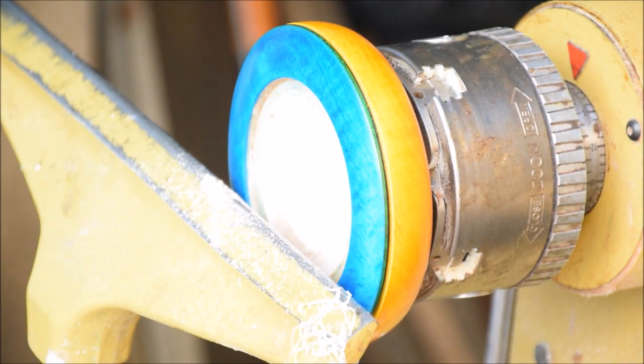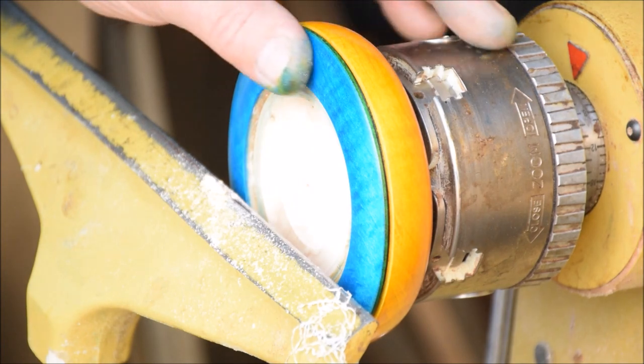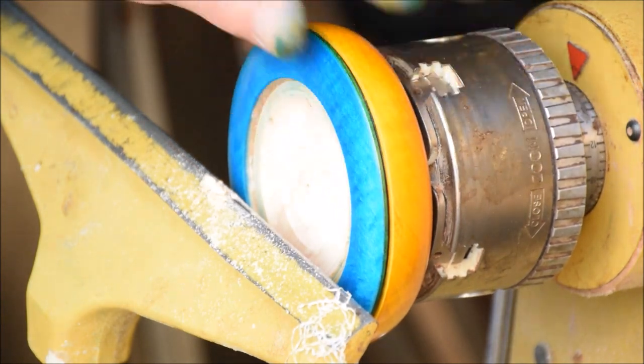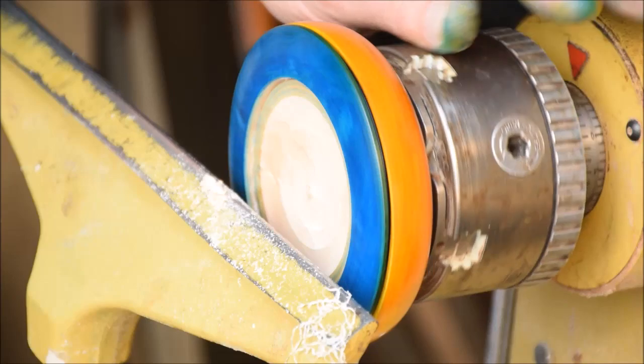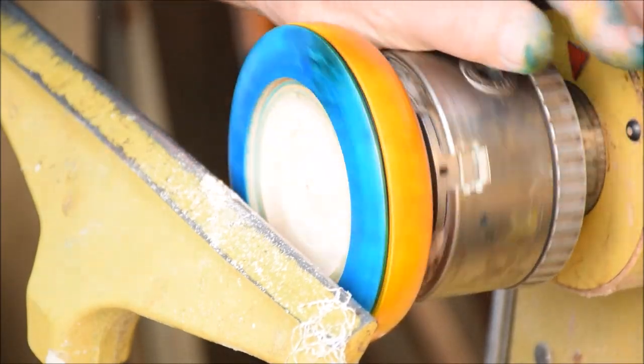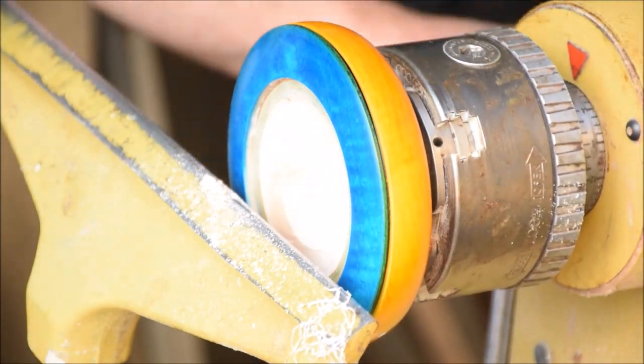So I'm getting ready to hollow this out. Everything's nice. Everything's dry. The colors look good. Saturation is nice. I'm getting some good fire from the piece. And now I'm just going to turn the middle of the bowl out. Got to be careful because it's pretty shallow.